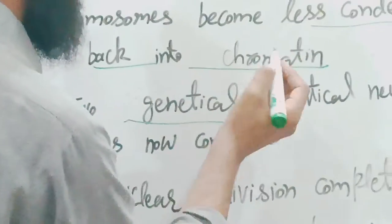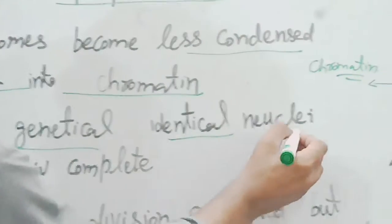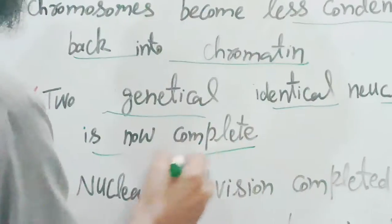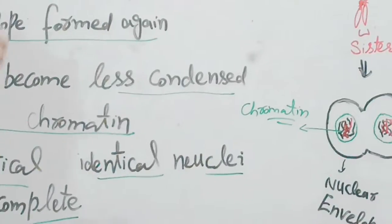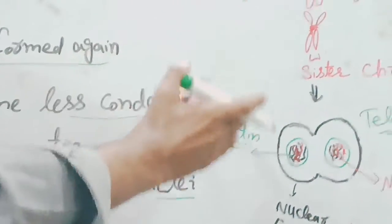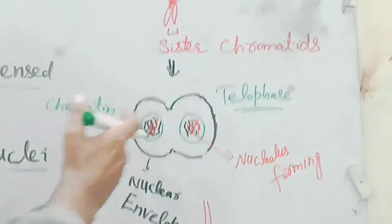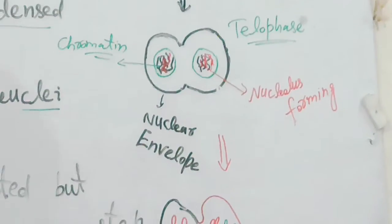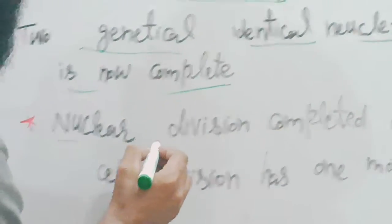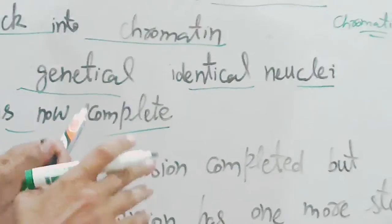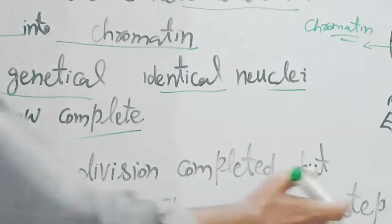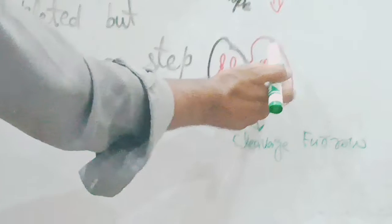Two genetically identical nuclei are now complete. Two genetically identical nuclei have been created. This is the first step completed. Nuclear division is now complete. The two nuclei each have the same chromosomes.